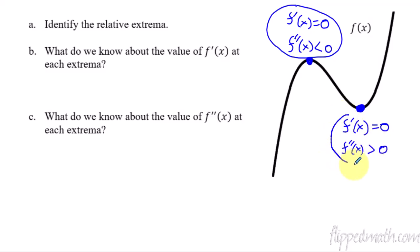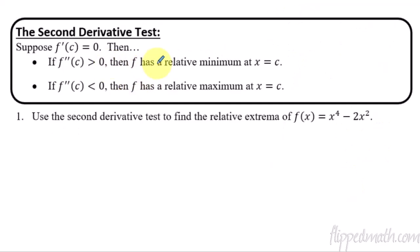Vice versa: if the first derivative is zero but the second derivative is positive, then we have a concave up situation with a horizontal tangent, and we have a minimum. If it's concave up, it goes up like that and we have a minimum. Notice you have to suppose you have some value where the first derivative equals zero — that has to be true first. It's not just any critical point; it's the critical points where the derivative equals zero, not where the derivative does not exist.